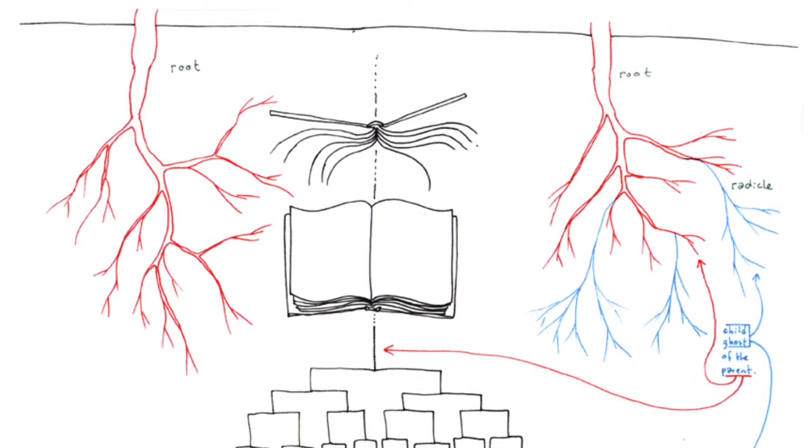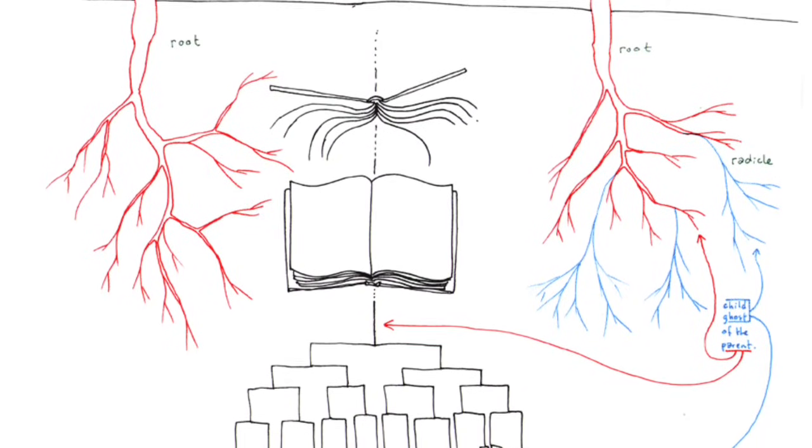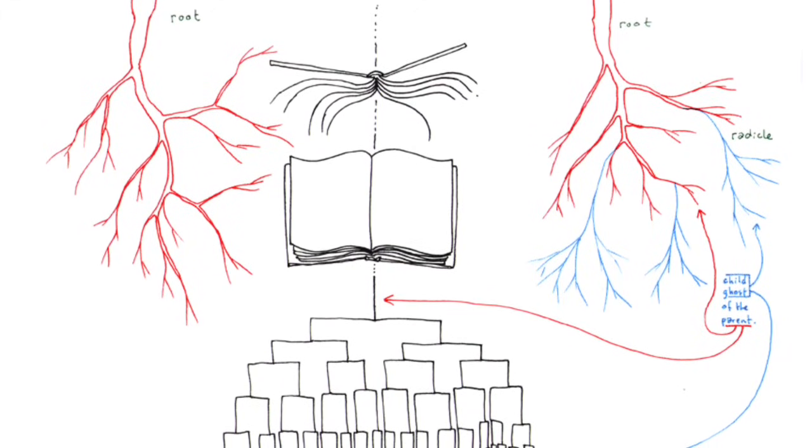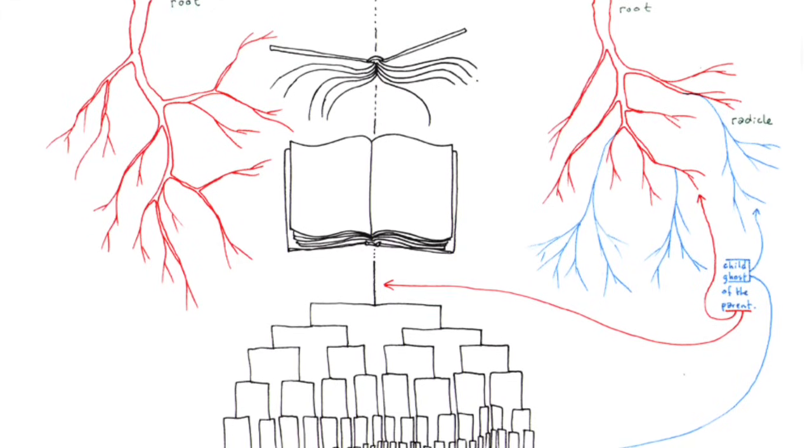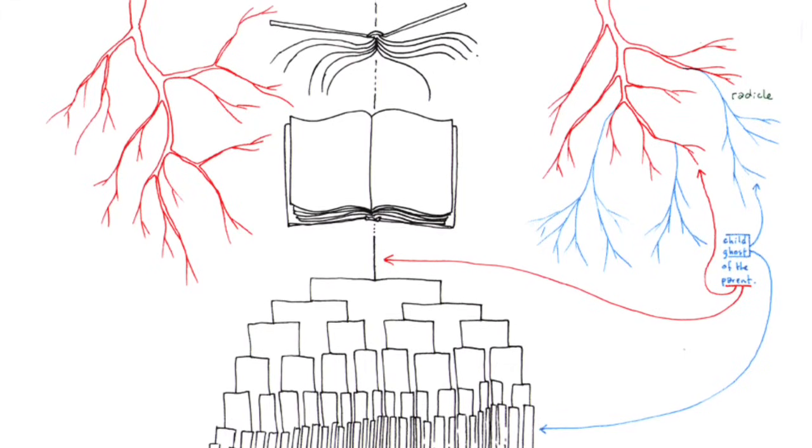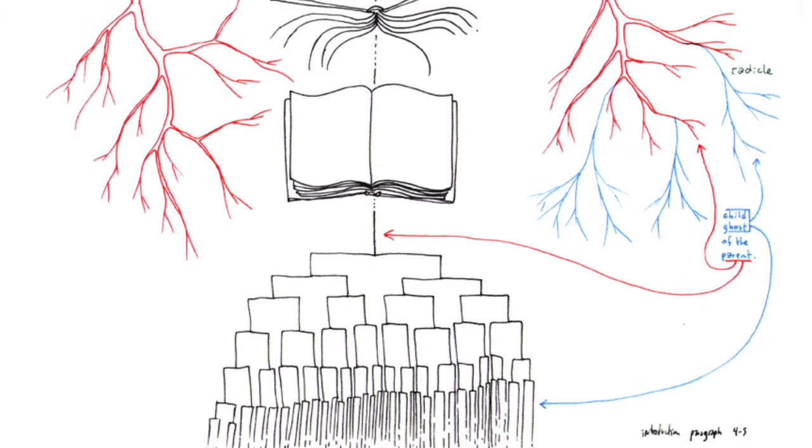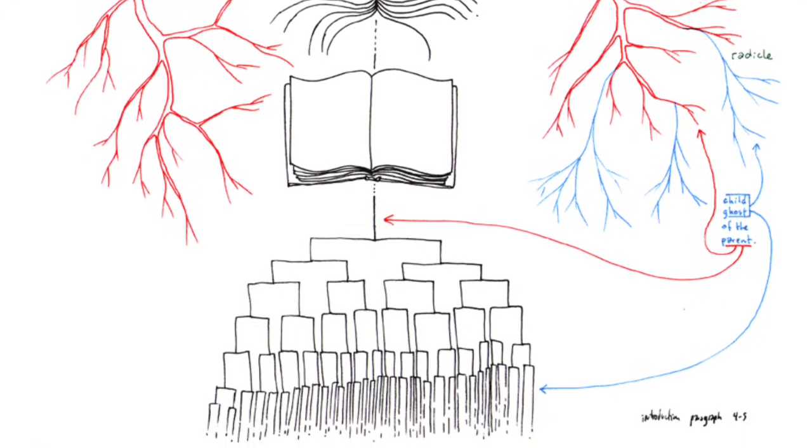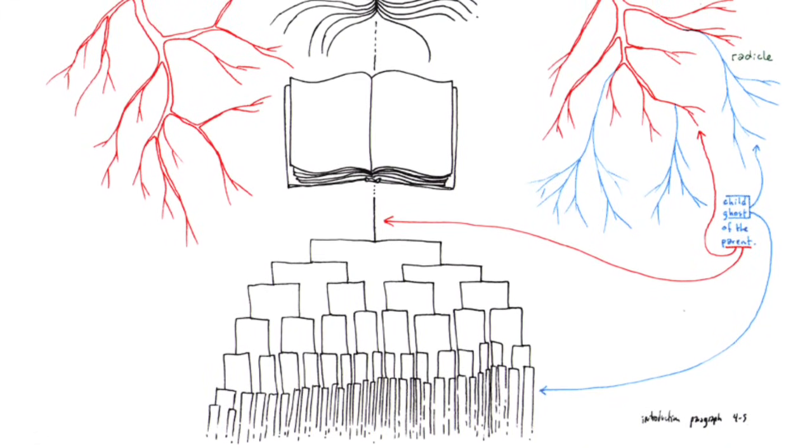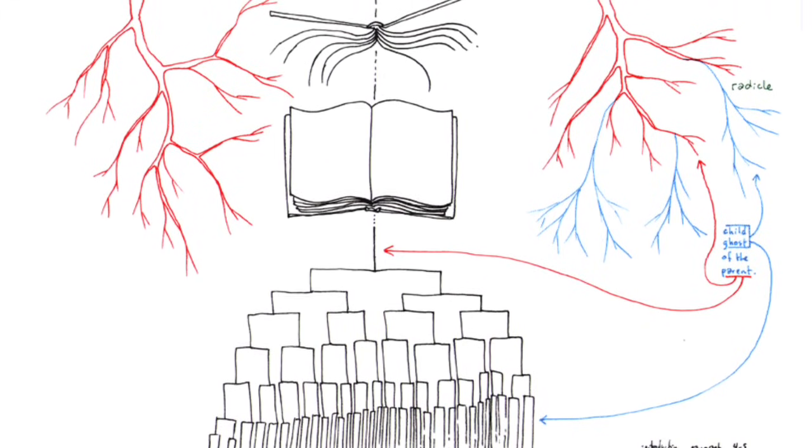Whenever we encounter this formula, even stated strategically by Mao, or understood in the most dialectical way possible, what we have before us is the most classical and well-reflected, oldest, and weariest kind of thought. Nature doesn't work that way. In nature, roots are taproots with a more multiple, lateral, and circular system of ramification rather than a dichotomous one. Thought lags behind nature. Even the book, as a natural reality, is a taproot, with its pivotal spine and surrounding leaves. But the book is a spiritual reality. The tree, a root as an image, endlessly develops the law of the one that becomes two, then the two that become four.